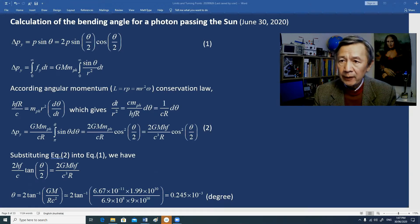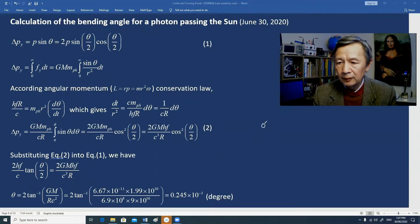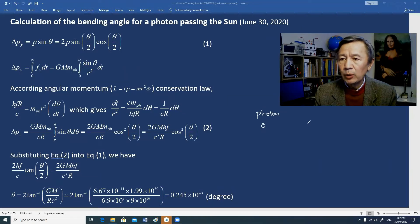Now first I would like to draw the diagram. So this is a photon, a particle, and without the Sun, the photon will simply travel along a straight line.